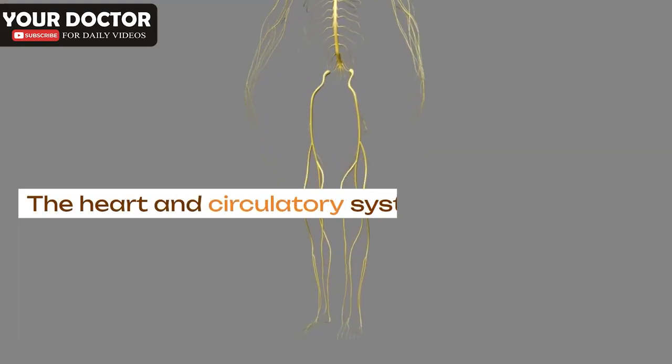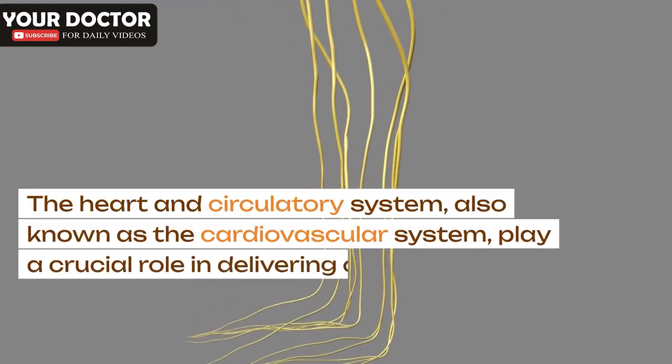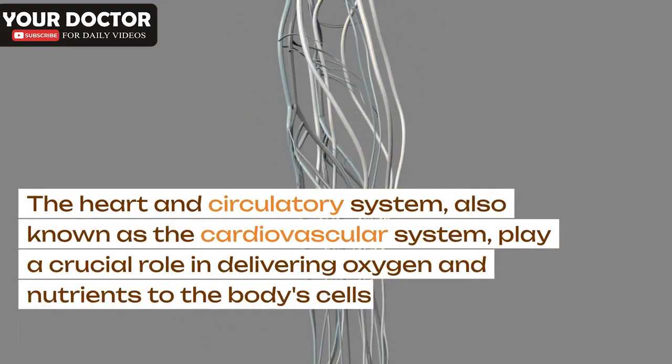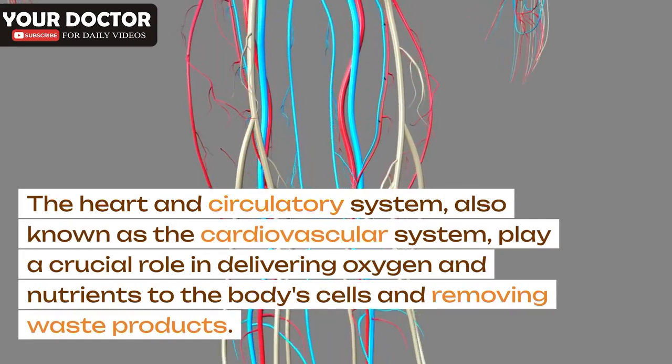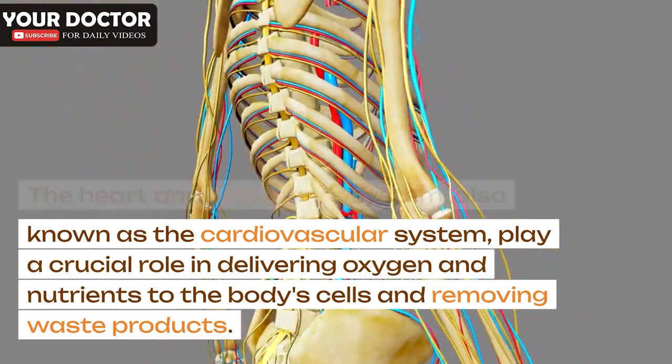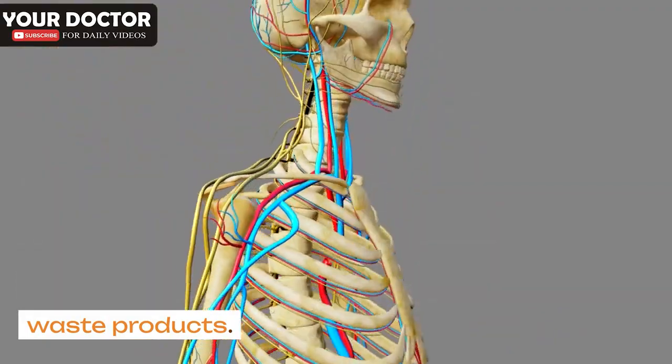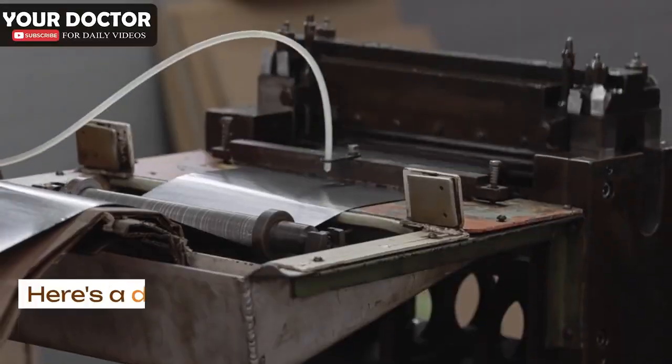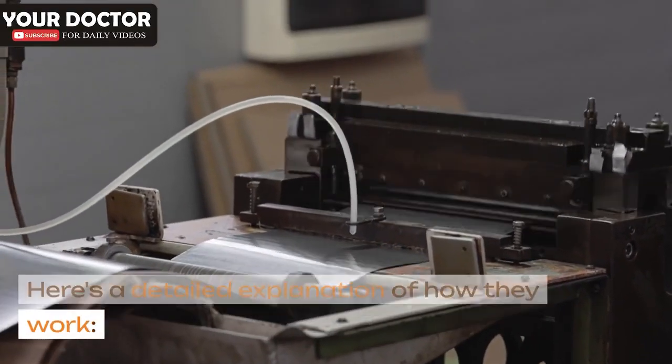Welcome to our doctor channel, your destination for reliable medical information, breakthrough research, and insightful discussions on all things health-related. The heart and circulatory system, also known as the cardiovascular system, play a crucial role in delivering oxygen and nutrients to the body's cells and removing waste products. Here's a detailed explanation of how they work.